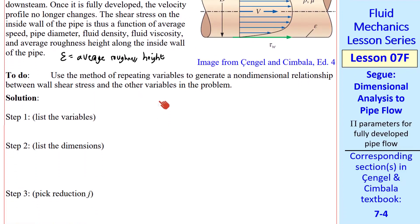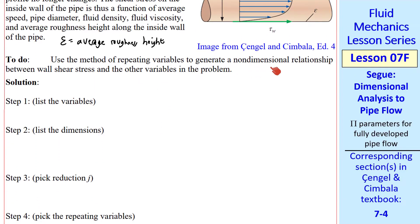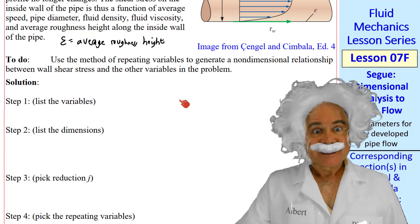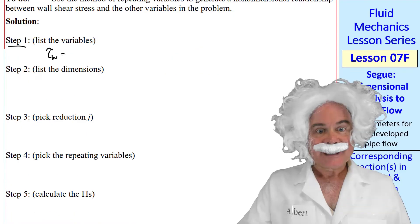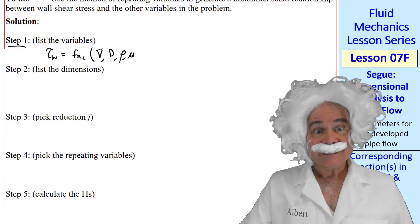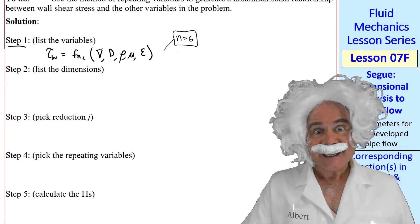Let's use the method of repeating variables to generate a non-dimensional relationship between wall shear stress and the other variables in the problem. I would like to solve this one. Okay, Albert, please do. Okay, step one. Tau w is a function of v, d, rho, mu, and epsilon. We count and get n equals 6.